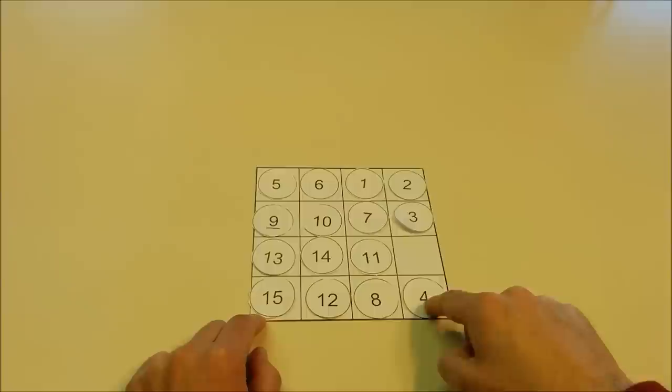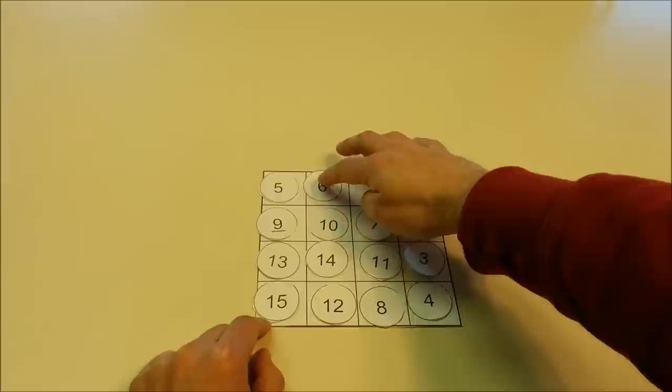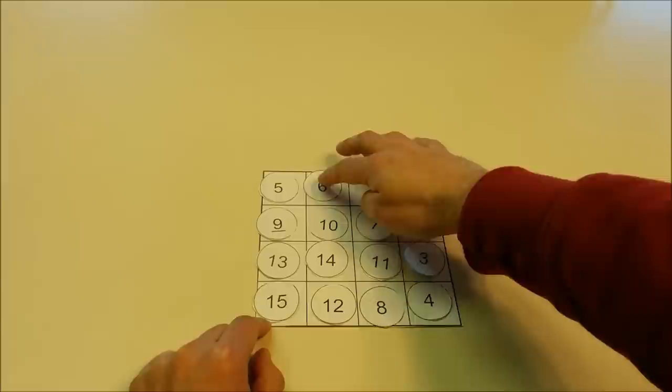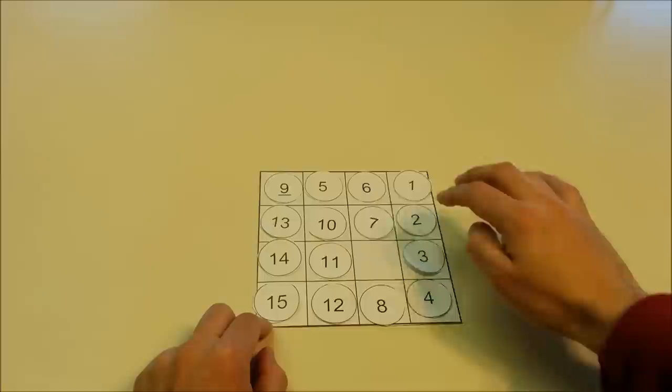Now we keep sliding the disks around the perimeter until we get 1, 2, 3, and 4 on the right-hand side. After we do this for a little while, we now very importantly need to move the 14 in between the 13 and 15, the 11 in between the 10 and 12.